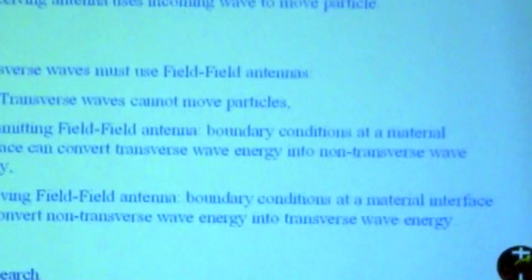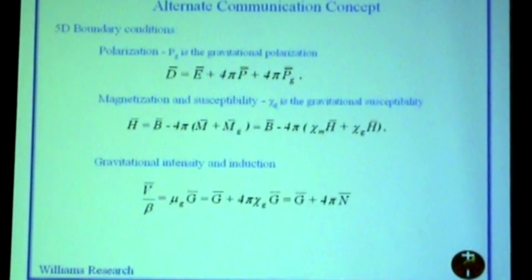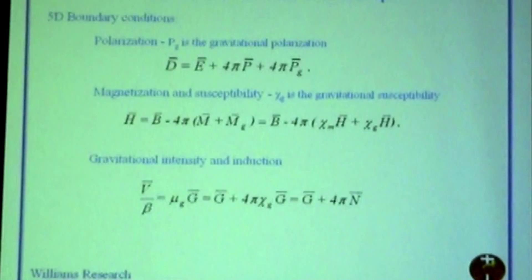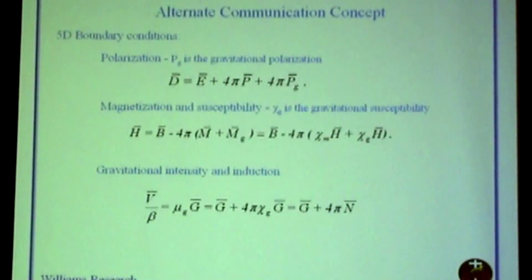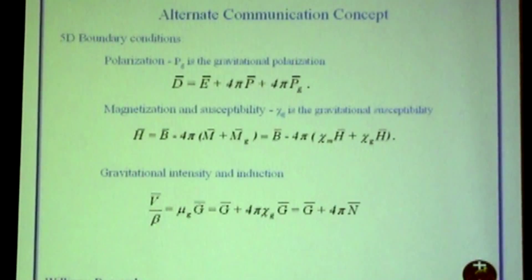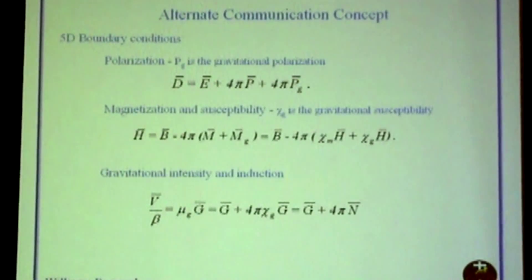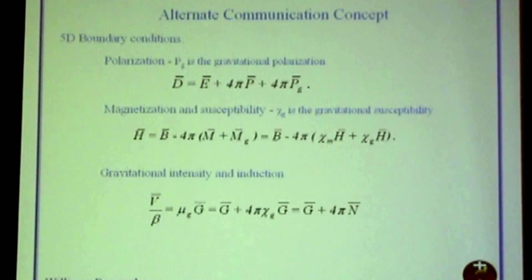So how are we going to do that? What is a field-field antenna? One of the things we all did in electromagnetic classes is shine light into a piece of glass: you calculate the transmission and reflection coefficients, do it at an angle, and find that the polarization, magnetization, and all that come into play when accounting for boundary conditions at a boundary between two media. You've got to do that in five dimensions as well — so you've got gravitational polarization, susceptibility, and induction.